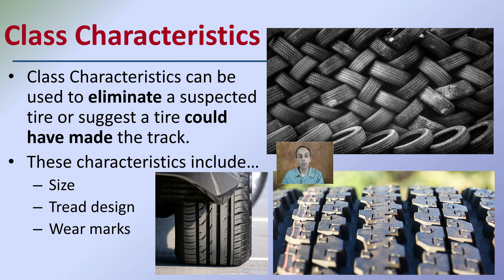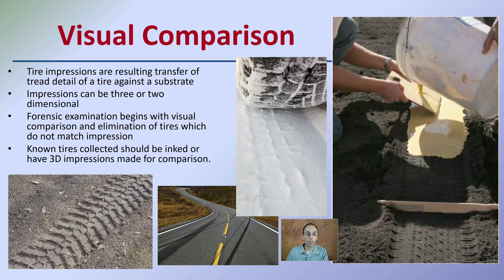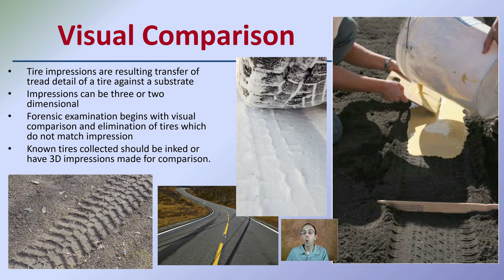Looking at the details is why images and photographs from the scene can be so important. This can lead to a visual comparison. These tire impressions are a result of transfer from tread detail — a tire against a substrate, which could be sand, asphalt, snow, or mud. Impressions can be two or three dimensional. Forensic examinations can begin with visual comparisons to eliminate tires which do not match the impressions, which is a great way to quickly eliminate or classify certain prints using visual cues.